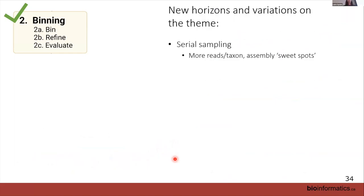There are some variations on the theme. A lot of times in this science we do serial sampling — sampling the same system or person multiple times — then make multiple assembled metagenomes and pull those together into one binning, or co-assemble them. The idea is you can get more reads for certain taxa and hit assembly sweet spots with resampling. I don't actually use this myself, but it's something you'll see in the field.